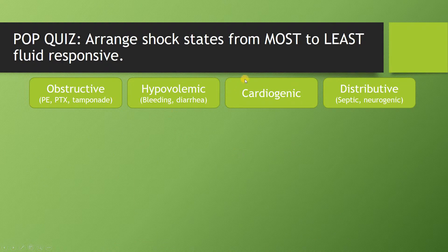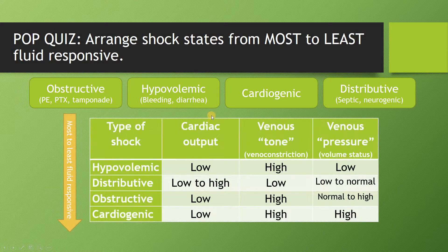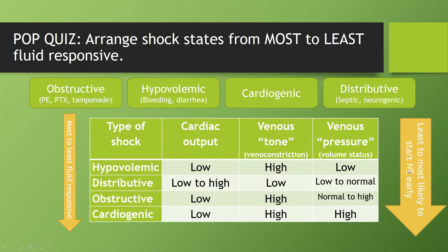Pop quiz: arrange shock states from most to least fluid responsive. The hypovolemic patient is most responsive to fluid, distributive shock is a close second, and obstructive and cardiogenic forms become less and less fluid responsive. This leads directly into when to use norepinephrine on the floor: cardiogenic shock patients are the most likely candidates for norepinephrine, while hypovolemic patients are least likely — there you want to give volume, not pressors.